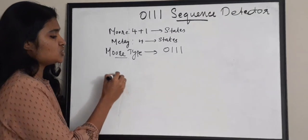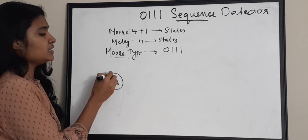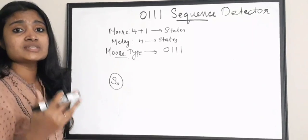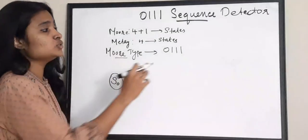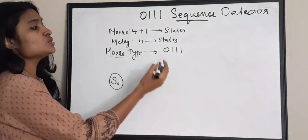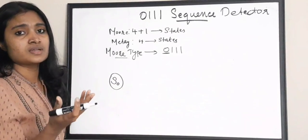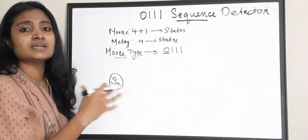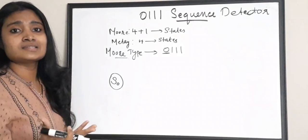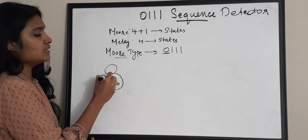S0 is my initial state. In this initial state I need to receive a 0 bit to progress further or start my sequence detection. For that you have to look at your sequence: it is 0 1 1 and 1. So you need to receive a 0 to start your sequence, otherwise you will have to stay at your initial state itself.